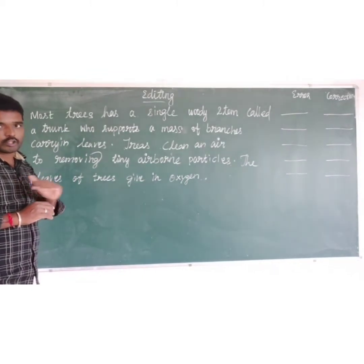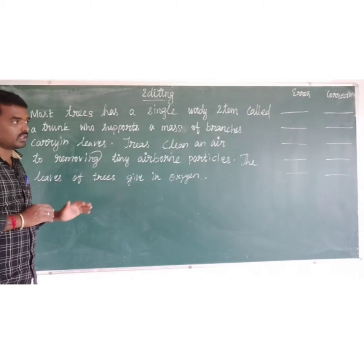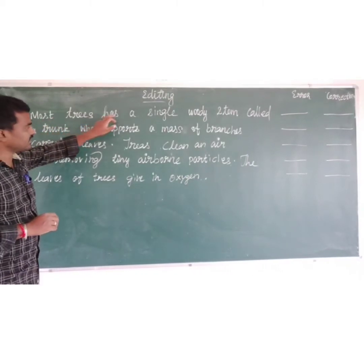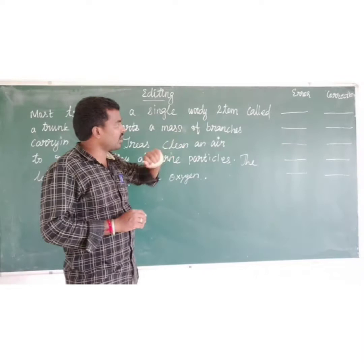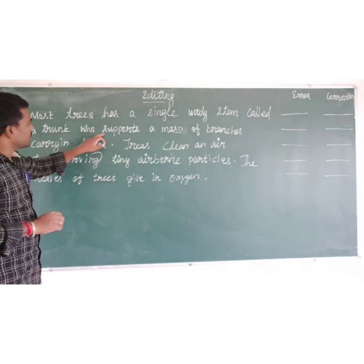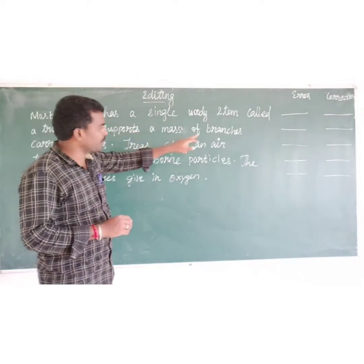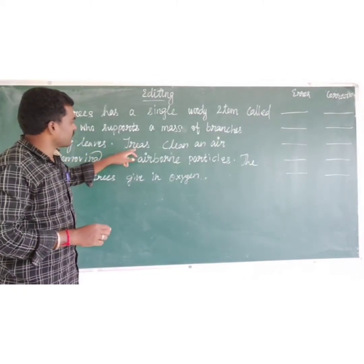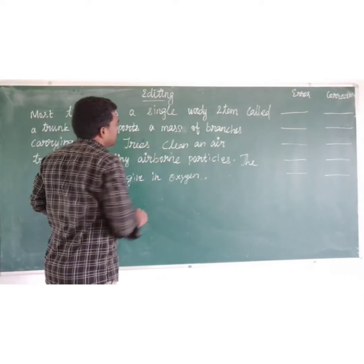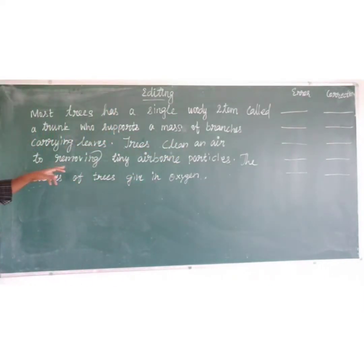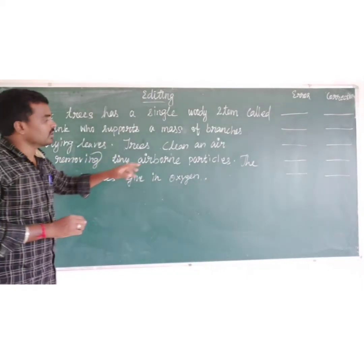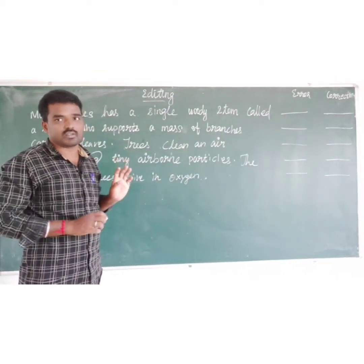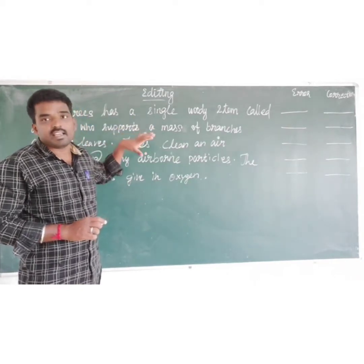At the same time, you don't look at the options. The passage is: Most trees has a single woody stem called a trunk, who supports a mass of branches carrying leaves. Trees clean and air to removing tiny airborne particles. The leaves of trees give in oxygen. So in this, each line is having one error. We want to find the error and do the correction.